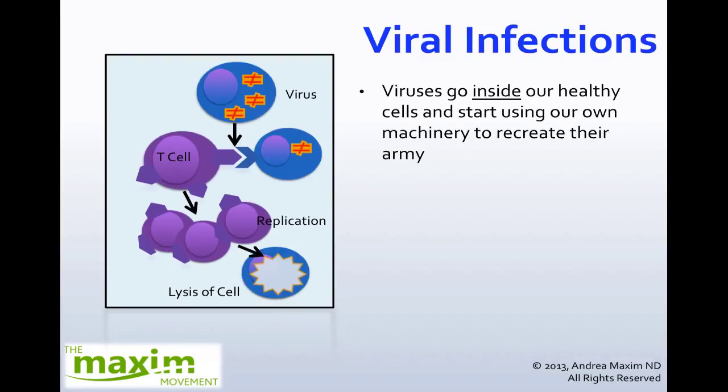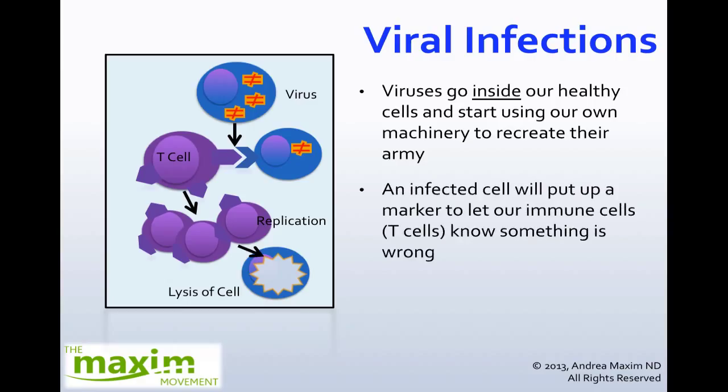With regards to viral infections, what we have here is cell-mediated immunity. This is where the viruses will actually go inside our healthy cells and start using their own machinery to recreate their army. That's why we have these little orange things here showing the virus replicating within the cell. We have a different type of immune cell called a T cell that constantly travels around in the blood system. And when these natural healthy cells get infected, they actually send out these little triggers on the outside of their surface.